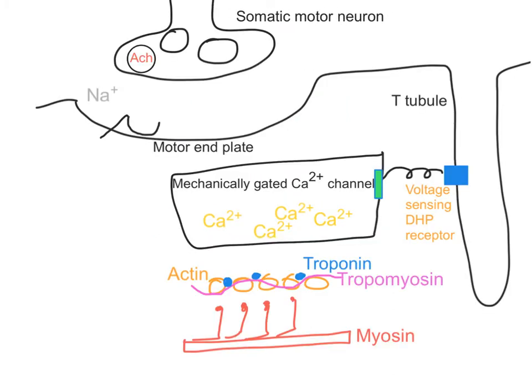Let's start with the somatic motor neuron. This is the efferent signal coming from the CNS. There would have been action potentials traveling down the axon of the somatic motor neuron reaching the axon terminal. This would have resulted in an opening of the voltage-gated calcium channels and calcium would have entered the cell.